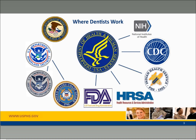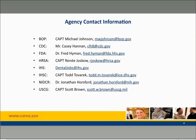We have dentists that work in multiple agencies under multiple departments. Within the Department of Justice, U.S. Public Health Service dentists are in the Federal Bureau of Prisons. Within the Department of Homeland Security, all of the U.S. Coast Guard dentists are U.S. Public Health Service dental officers, and we also provide dentists to the U.S. Immigration and Customs Enforcement Health Service Corps. Within the Department of Health and Human Services, we have dentists in the National Institutes of Health, the Centers for Disease Control and Prevention, the Indian Health Service, the Health Resources and Services Administration, and the Food and Drug Administration.